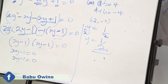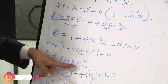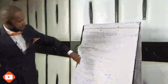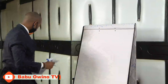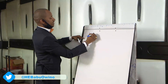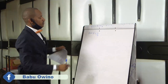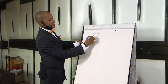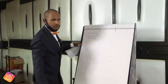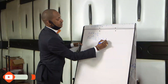Remember we said sin x = y. Therefore sin x = 1/2. We look for the angle whose sine equals 1/2. From the mathematical tables or calculator, that angle is 30 degrees.